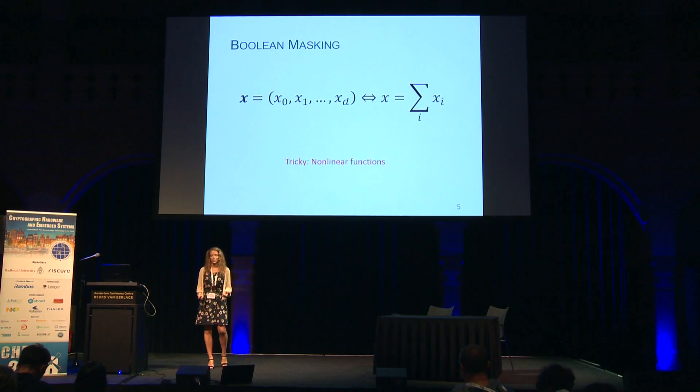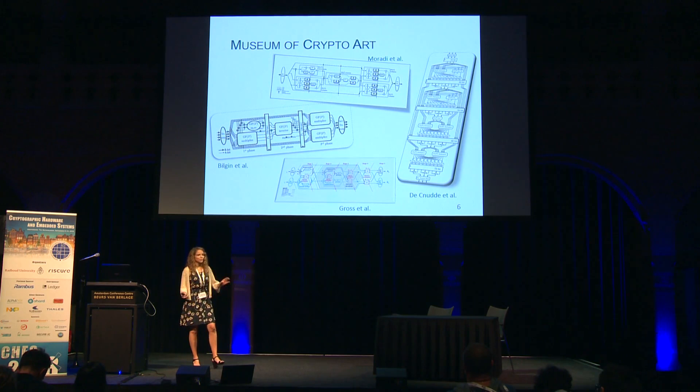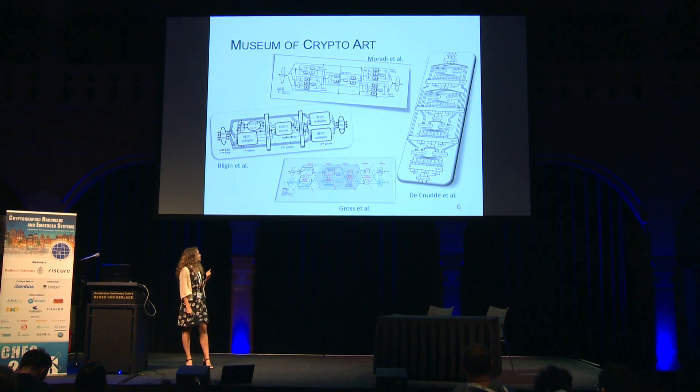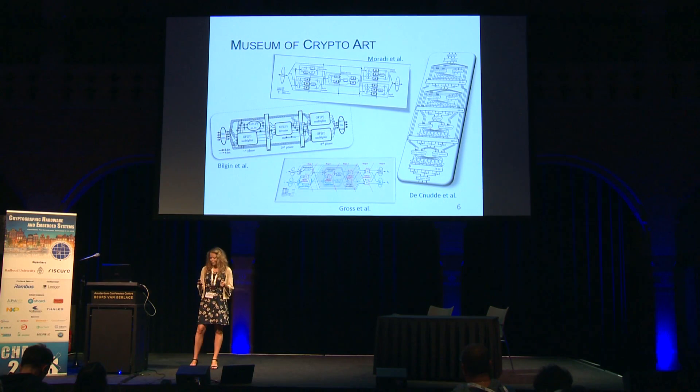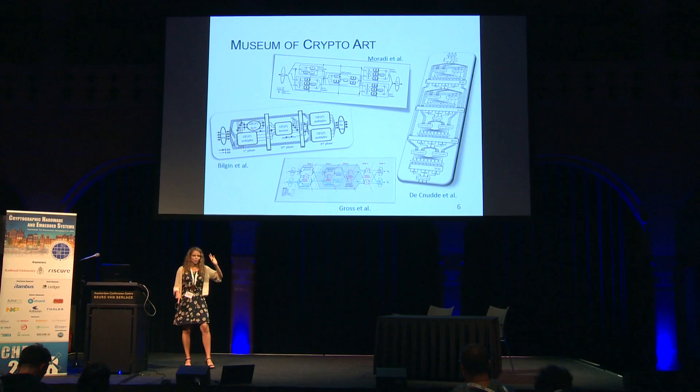We've seen many works successfully implementing AES and trying to do it as efficiently as possible. Many of these use the tower field approach of CanRight, a very nice approach that has inspired some complex but elegant circuit designs. But it's also a very complex method, and the good news is that for this talk, you do not need to understand any of that, because we're going to do something a lot simpler.